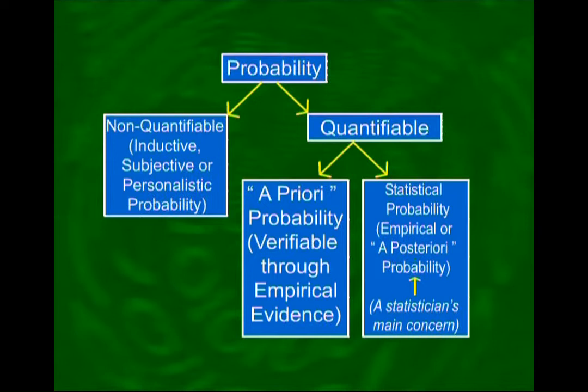The quantifiable probability can be divided into two categories. The classical definition of probability is valid in the situation where the various possible outcomes are equally likely. The relative frequency definition applies in other situations where we cannot say that the various possible outcomes are equally likely. A statistician's main concern is the relative frequency definition of probability, because in statistics we are largely dealing with real life phenomena where various possible outcomes are not equally likely.